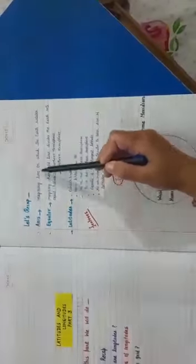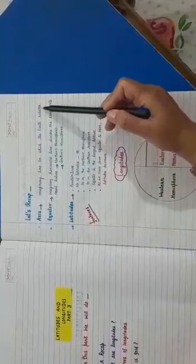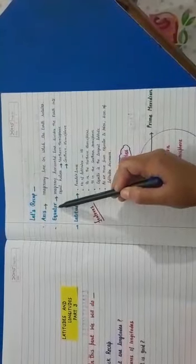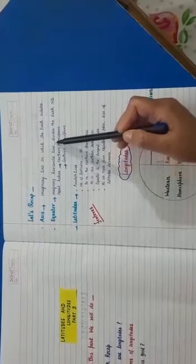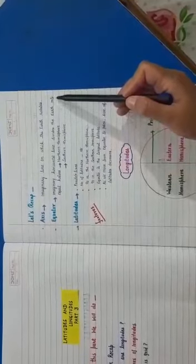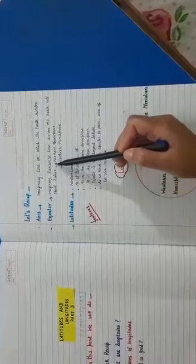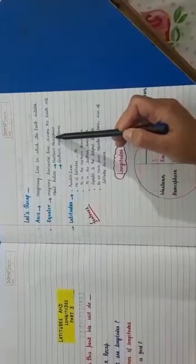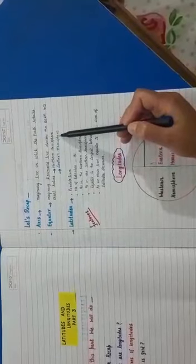Axis: imaginary line on which the Earth rotates. Equator: imaginary horizontal line that divides the Earth into two equal halves, Northern Hemisphere and Southern Hemisphere.